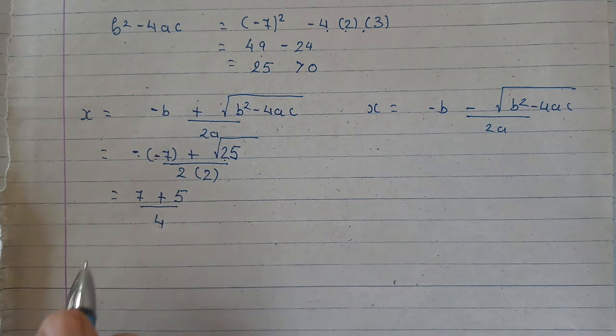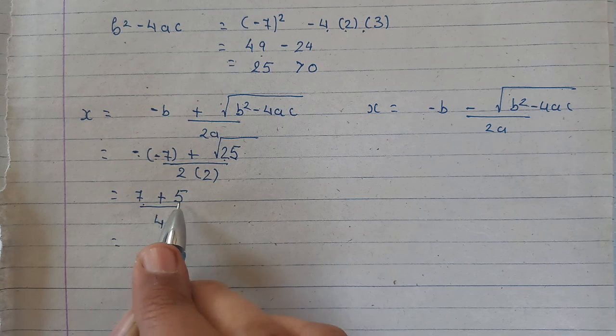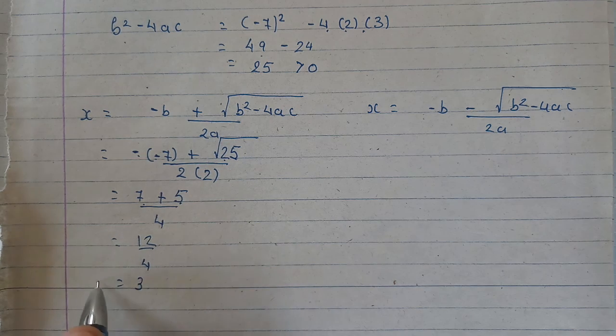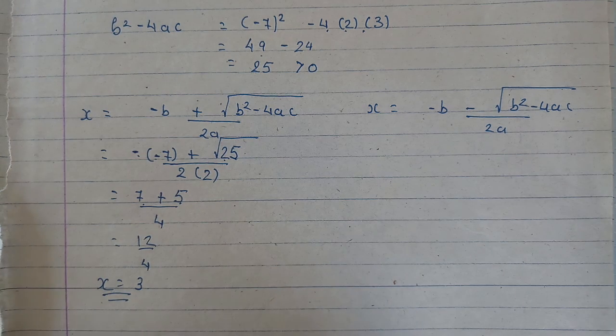Upon 2 into 2 is 4. On solving it further, 7 plus 5 is 12 upon 4. And 12 upon 4 is 3. So one root we got is 3.